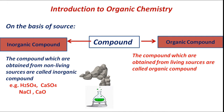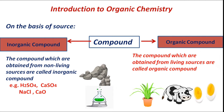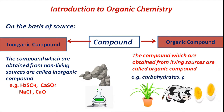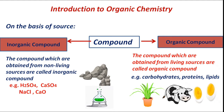Organic compounds are the compounds which are obtained from living sources. These are obtained from plants, animals, or other living sources. Examples include carbohydrates, proteins, and lipids.